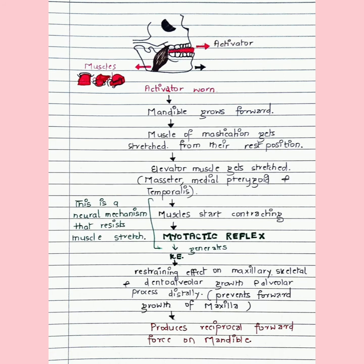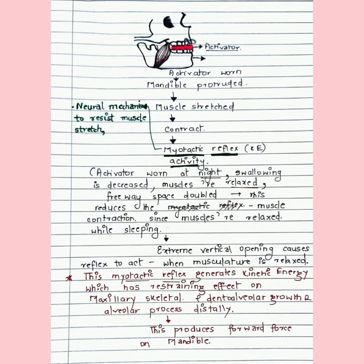This generates kinetic energy. The stretching and contracting of the muscle has a restraining effect on the maxillary skeletal-dental-alveolar growth and alveolar process, preventing forward growth of the maxilla and displacing the maxillary skeletal-dental-alveolar base distally. This creates a reciprocal forward force on the mandible. The extreme vertical opening we create is precisely because these muscles get stretched and contract — this is how the activator is activated.